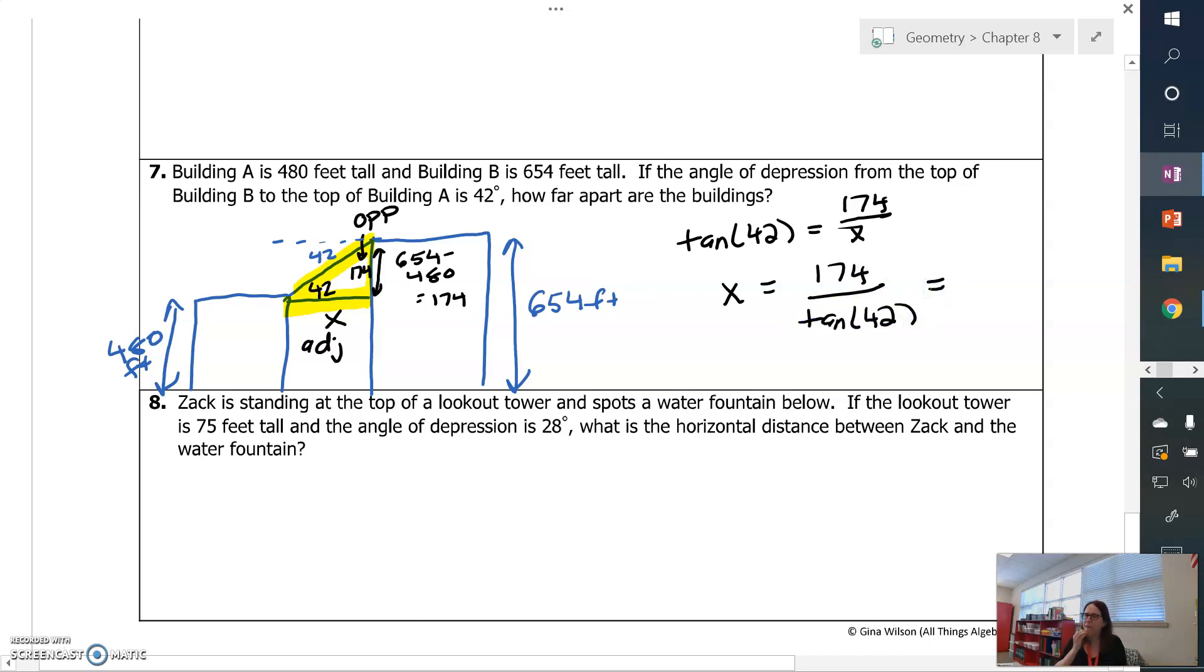And when I solve that, I get 174 divided by tangent of 42. On my calculator, I got 193.2. So that means these two buildings are 193.2 feet apart.